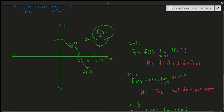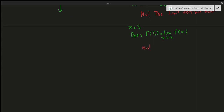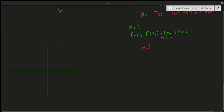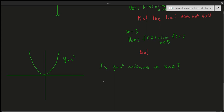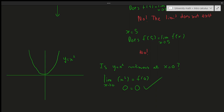Now let's do an example where it is continuous. Suppose we have the parabola y = x². Is this continuous at x = 0? Yes. The limit as x approaches 0 of x² equals 0, and f(0) also equals 0. They're equal, so yes, it is continuous at x = 0.